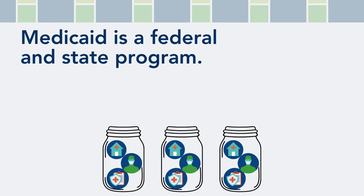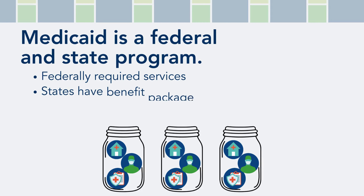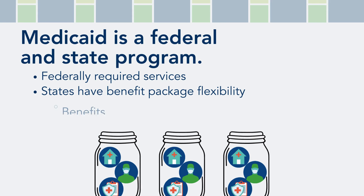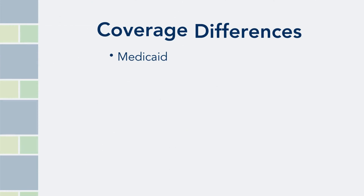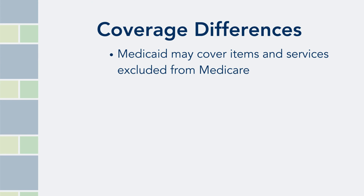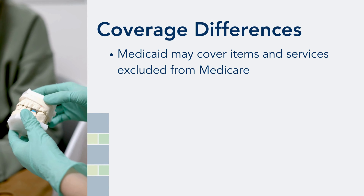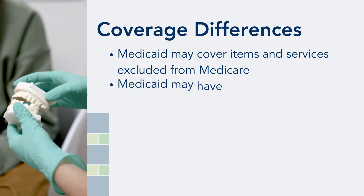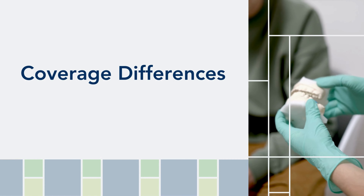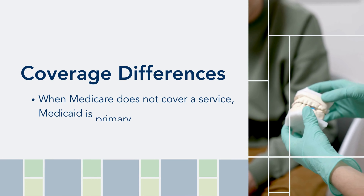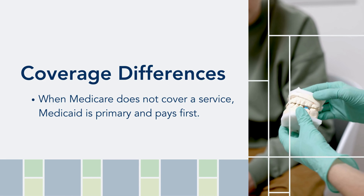All Medicaid programs are required by federal law to cover certain services, but states can also add to or otherwise modify the Medicaid benefit package as long as they have federal approval. For this reason, a benefit that is included in one state may not be covered by another. Medicaid may cover items and services that Medicare excludes, such as dental services, or it may have different coverage rules for something that both programs can cover, like a wheelchair. For services that Medicare does not cover, Medicaid is the primary insurance and must pay first.